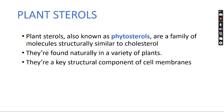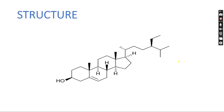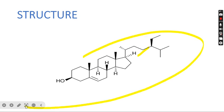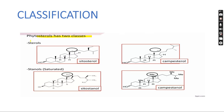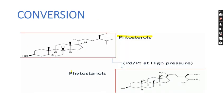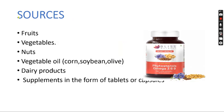Plant sterols, also known as phytosterols, are a family of molecules structurally similar to cholesterol. They are found naturally in a variety of plants and have a key role in cell membranes. Phytosterols have two classes: sterols — including sitosterol and campesterol — and stanols — including sitostanol and campestanol. Phytosterols may be converted into phytostanols when treated with platinum and palladium under high pressure.